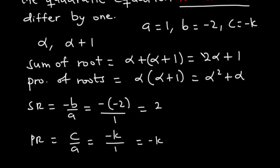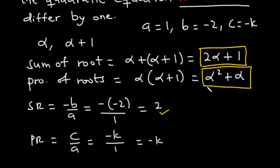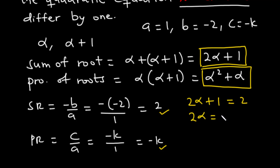We now equate the expressions. Setting 2 alpha plus 1 equal to 2, we transpose 1 to the right-hand side to get 2 alpha equals 2 minus 1, which equals 1. Dividing both sides by 2, we get alpha equal to 1 over 2.